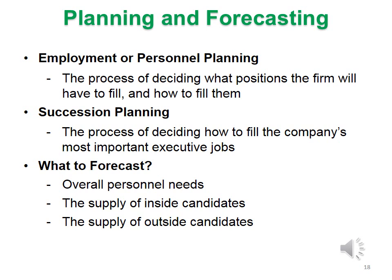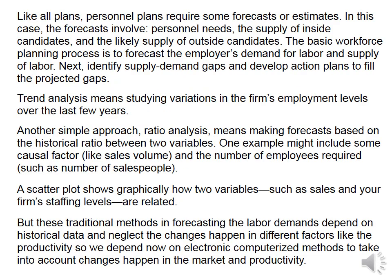We have to forecast the demand side and the supply side of our labor — overall personnel needs on the demand side, and the supply of inside and outside candidates. When forecasting the demand side of labor, traditional methods include trend analysis, which means studying the variation in the firm's employment levels over the last few years, and ratio analysis, which means making forecasts based on the historical ratio between two variables, such as sales volume and the number of salespeople.